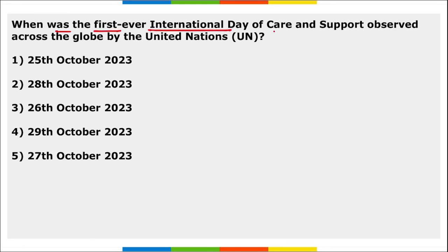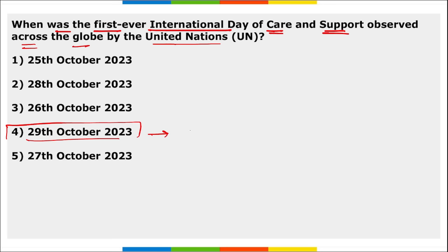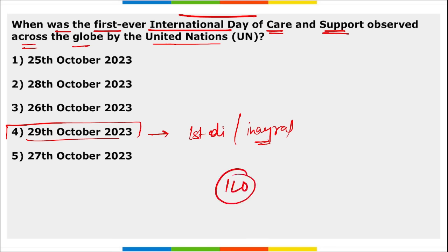When was the first-ever International Day of Care and Support observed? It is on 29th October every year — this year was the inaugural edition. According to ILO, global care work comprises 249 million women and 132 million men.